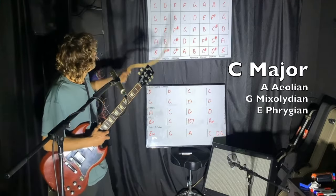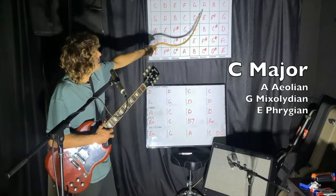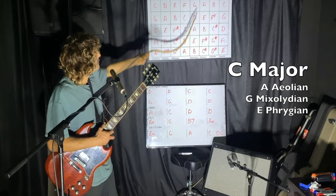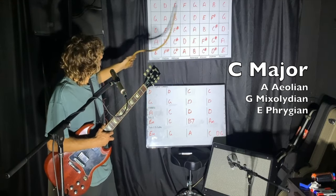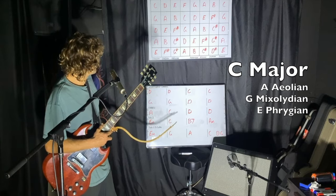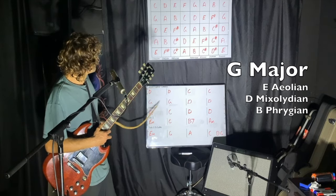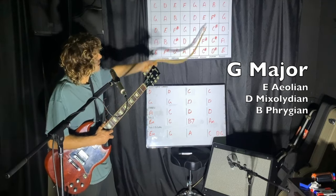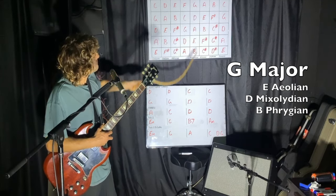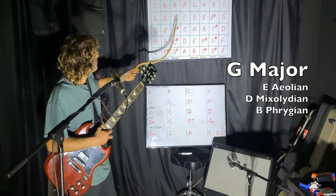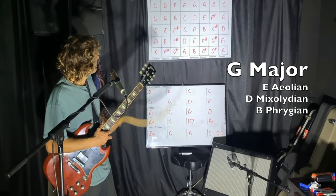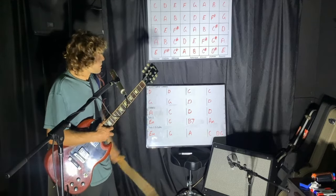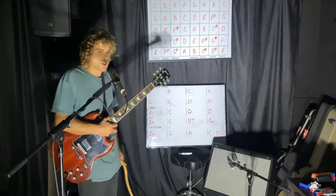For the C chord, we can use the A minor pentatonic or the Aeolian, the G Mixolydian, or the E Phrygian. For the G major, we can use the E minor pentatonic or the E Aeolian, the D Mixolydian, or the B Phrygian. Now I'm going to go back on the loop and try to play between all of those and see how we go.